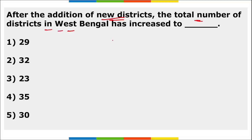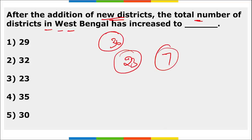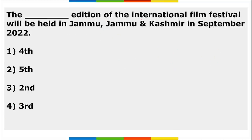After the addition of new districts, the total number of districts in West Bengal has increased to 30. Earlier there were 23 districts; seven new districts were added, bringing the total to 30. La Ganesan has been given the additional charge as Governor of West Bengal.